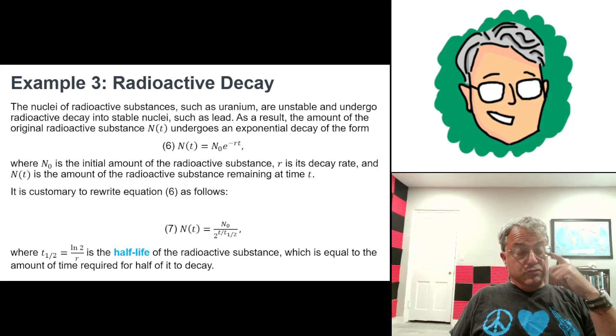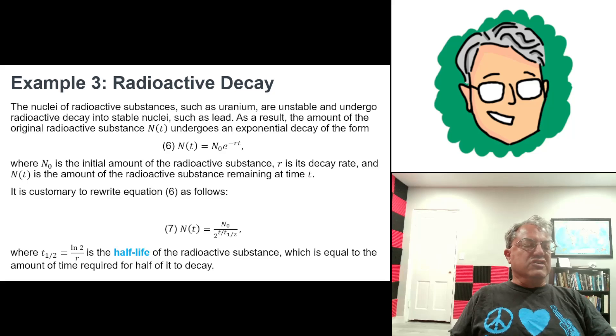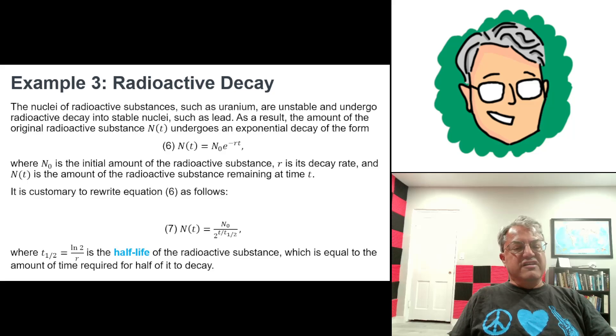That's one way you can write this equation, but it's more customary to write it in terms of the half-life. So if you write the equation in terms of the half-life, you get N(t) = N₀·2^(-t/t₁/₂), where t₁/₂ is what's called the half-life of the radioactive substance. And we can express that in terms of its decay rate R, just as ln(2)/R. So anyway, that's radioactive decay. And that's a very useful thing to know.